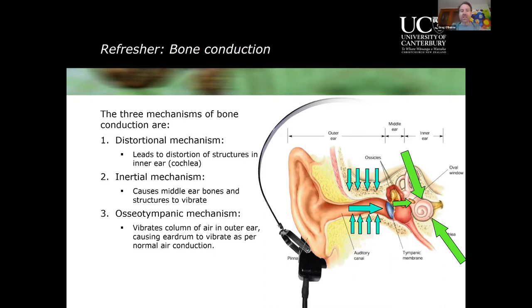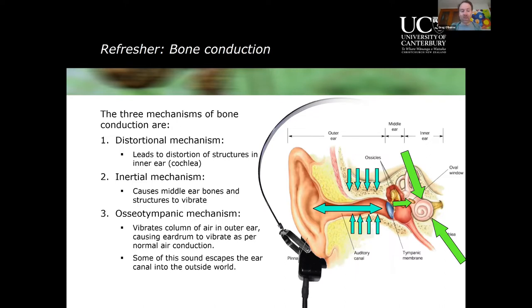One thing you'll notice is that if you block your ears, that bone-conducted sound starts to sound louder. Blocking the ear stops some of that sound from escaping. So we have sound energy entering the ear canal — some goes towards the tympanic membrane, but some also heads out. We have sound escaping out of our ears whenever bone conduction takes place. We'll talk about what happens if we stop that sound from escaping a little bit later.